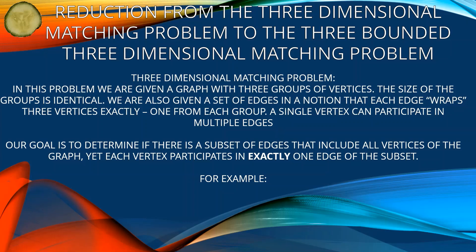In the 3-dimensional matching problem, we are given a graph with 3 groups of vertices. The size of the groups is identical. We are also given a set of edges where each edge connects exactly 3 vertices, one from each group. A single vertex can participate in multiple edges. Our goal is to determine if there is a subset of edges that includes all vertices of the graph, yet each vertex participates in exactly one edge of the subset — in other words, the subset of edges we are using is disjoint.